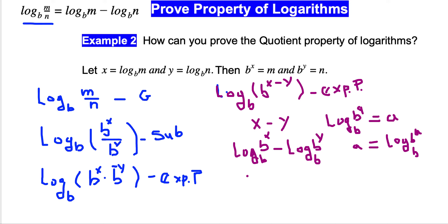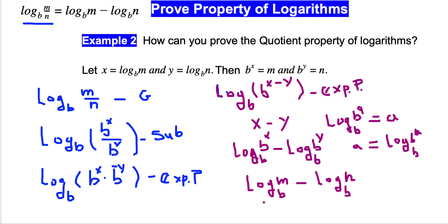By substitution, this equals log base b of m minus log base b of n. So we have proved that log base b of m divided by n is equal to log base b of m minus log base b of n.